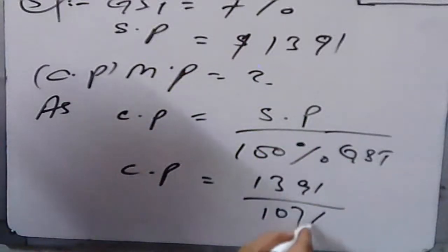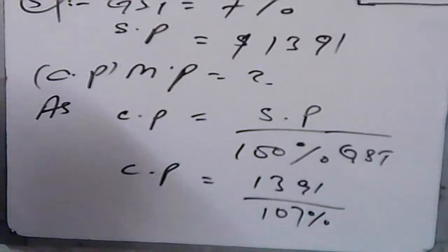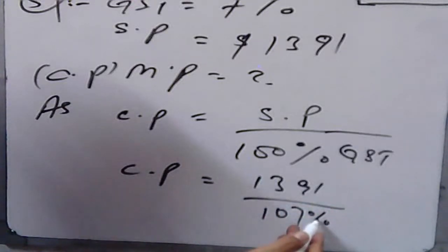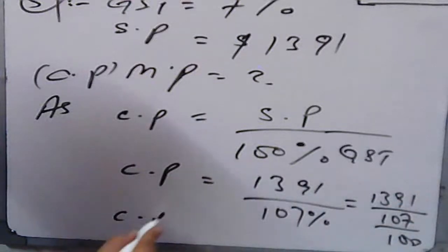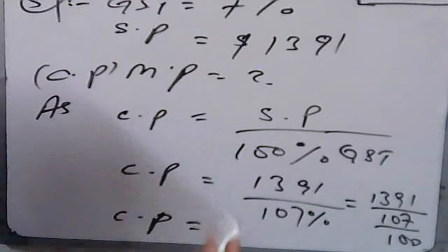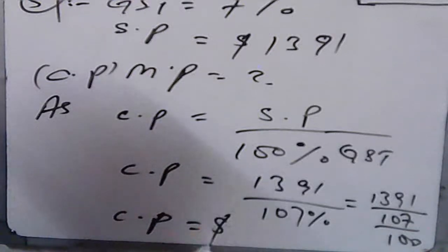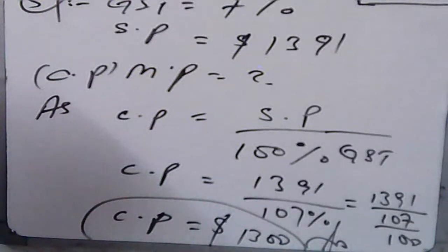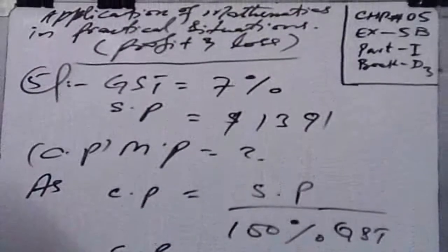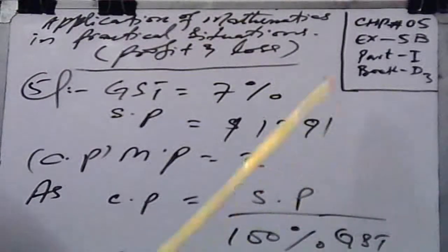So: Cost Price = 1391 × 100 ÷ 107 = $1300. That is your required market price for question number five. By the grace of God, we have completed Exercise 5B. I hope this will be helpful to you. Thanks a lot, thank you for watching.